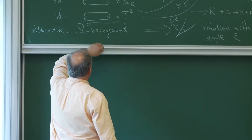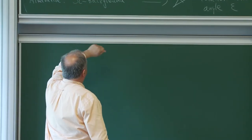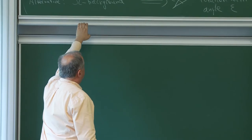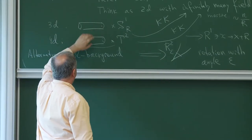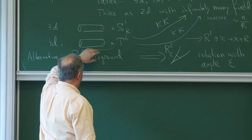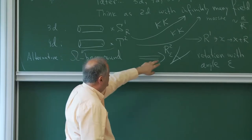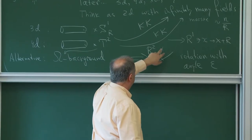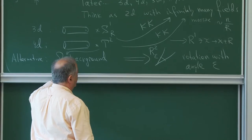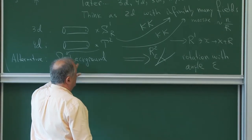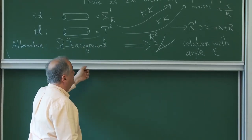So what I said is that we are studying now four supercharges in two dimensions, but the theories are not necessarily two-dimensional. They can be Kaluza-Klein from three, four, or five dimensions, or omega backgrounds coming from four or six dimensions. This requires two real space dimensions as minimum, so we can think about omega backgrounds coming from four or six dimensions if we have two angles like epsilon. So this is a setup.